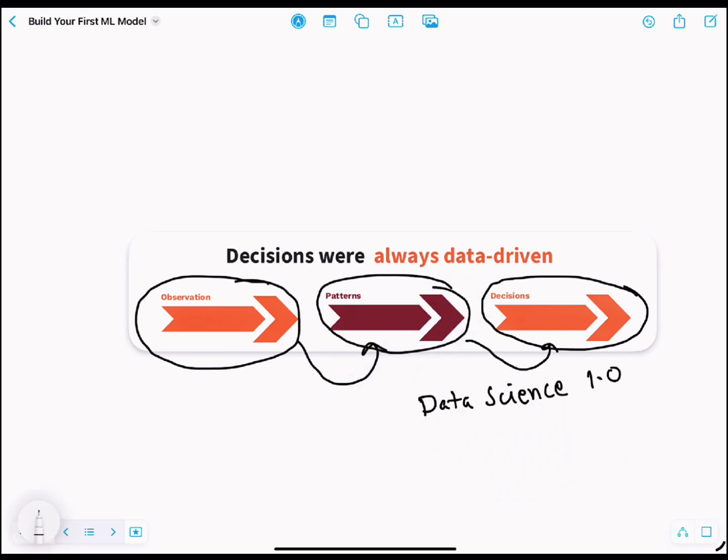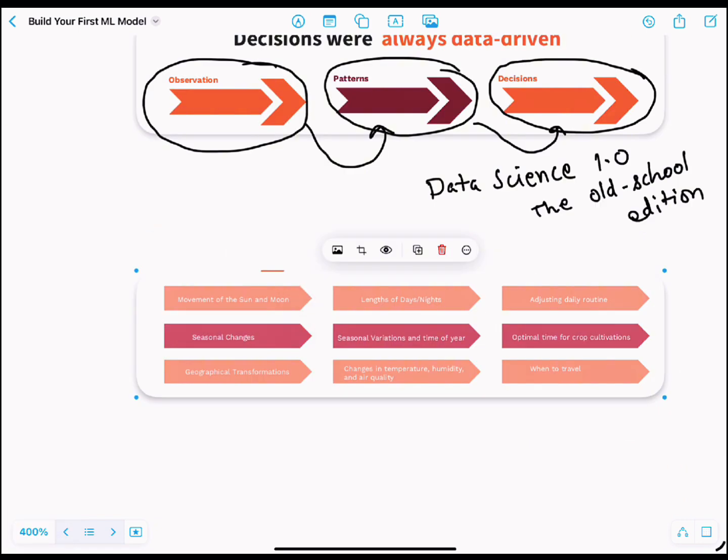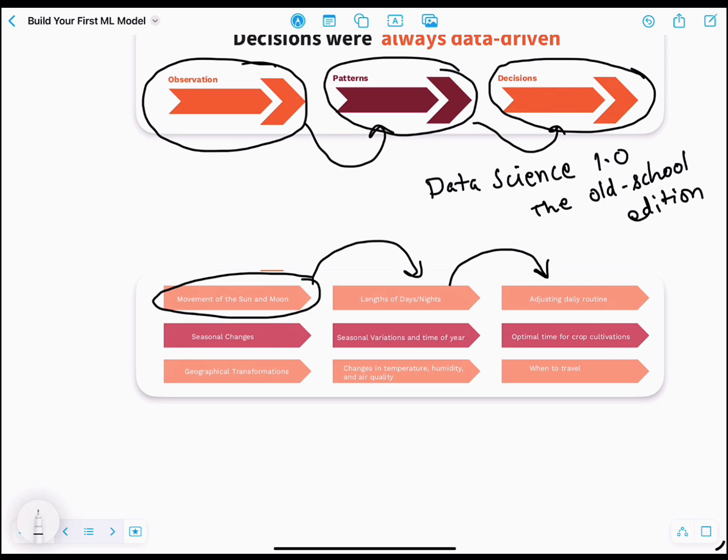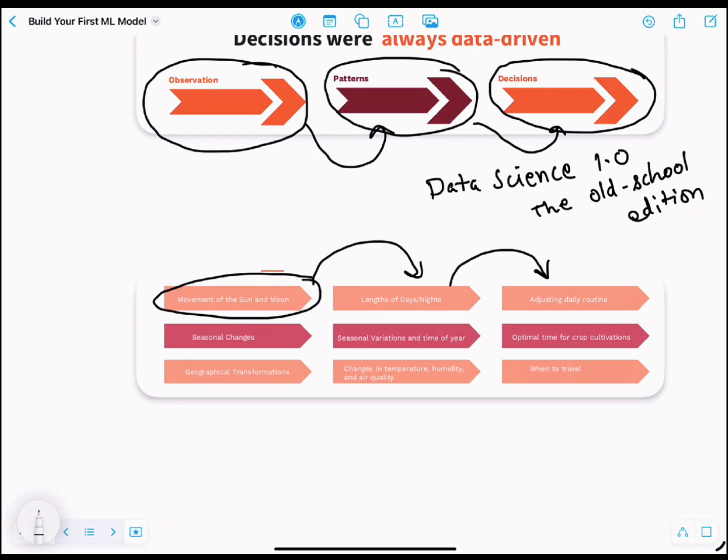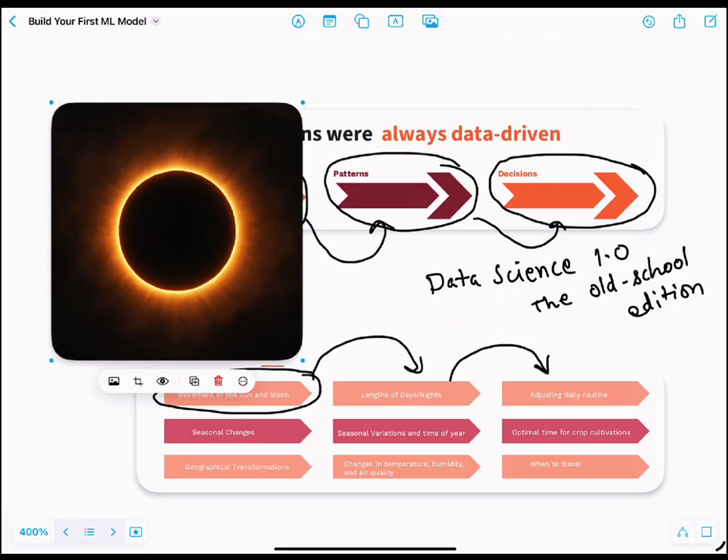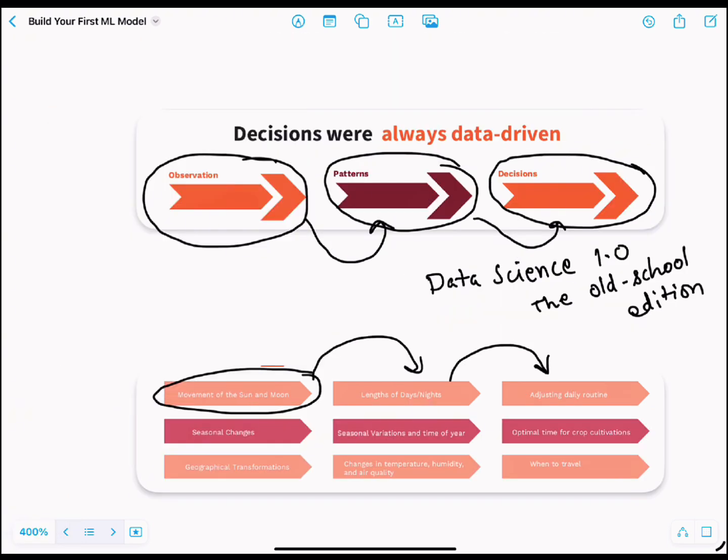For example, ancient people observed the movement of the sun and moon. They noticed that days and nights got longer or shorter depending on the time of year, so they adjusted their routines. Maybe woke up earlier in summer or slept in during winter. They could also predict eclipses.